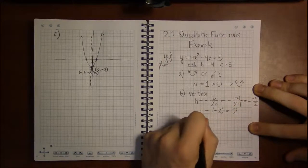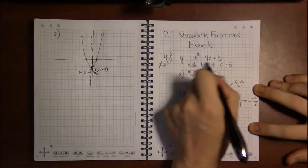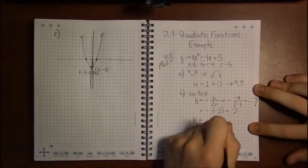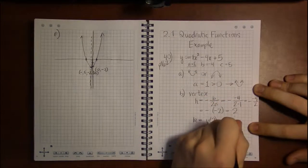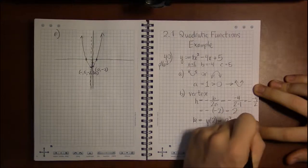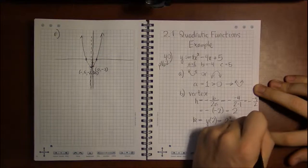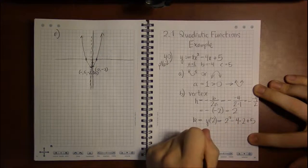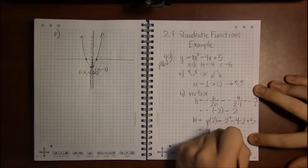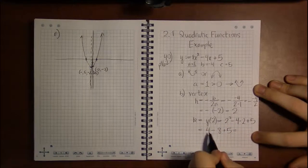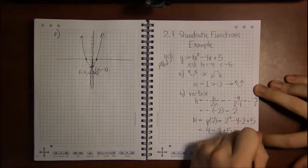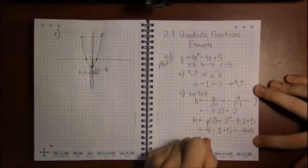Then to get k, the y-coordinate of the vertex, we plug 2 back into the function. So this is 2 squared minus 4 times 2 plus 5. Well, 2 squared is 4, 4 times 2 is 8, and 5 stays as it is for the moment.